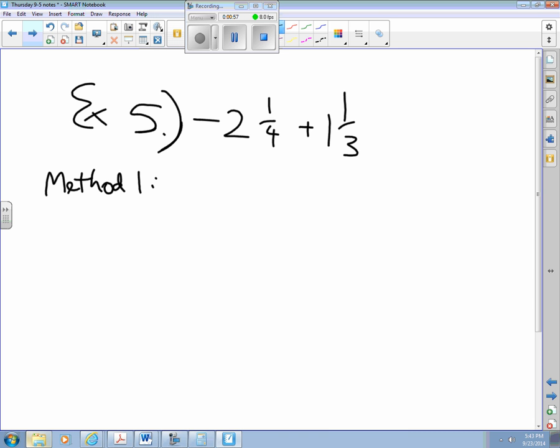Method 1 works by taking this mixed number and changing it to an improper fraction. So 2 times 4 plus 1 makes it 9 fourths, don't forget it's a negative. And then this would be 1 times 3 plus 1, which is 4 thirds, that one's a positive.